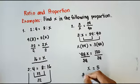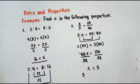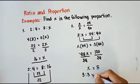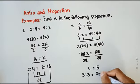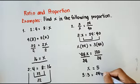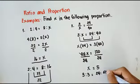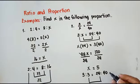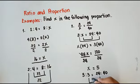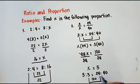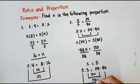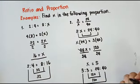Therefore, we have 3 is to 5 is equal to 24 is to 40. If we multiply 5 times 24, that is 120. Then 3 times 40 is also 100 twenty — verified.